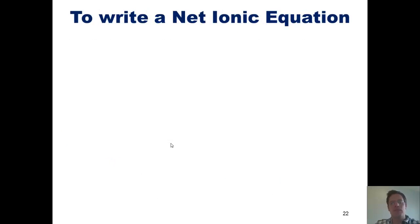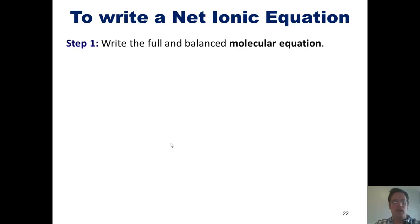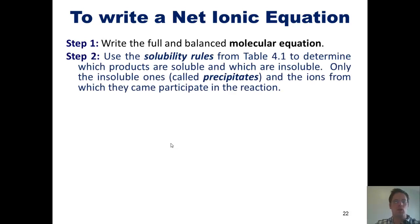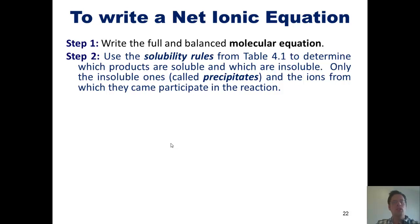Here are the steps we have to follow in order to write a net ionic equation. Step 1: write the full and balanced molecular equation. Step 2: use the solubility rules to determine which products are soluble in water and which ones are not. Only the insoluble ones, called precipitates, and the ions from which they came participate in the reaction.